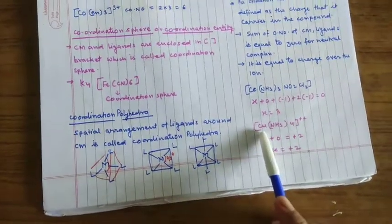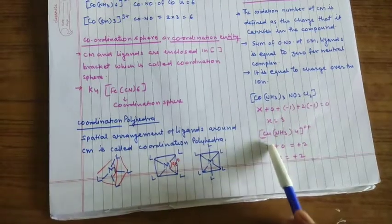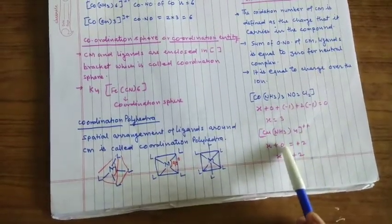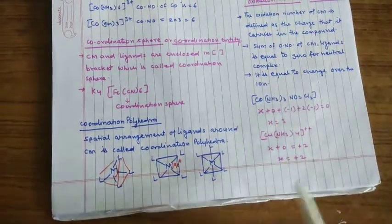Similarly calculate the oxidation state of copper in this complex. ठीक है इसको x मान लीजे। Ammonia का zero है तो four times zero। तो ये वाला equal to charge over the complex that is plus two. So x equal to plus two।